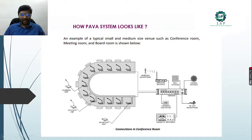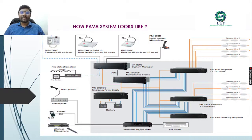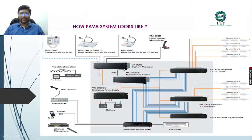In a conference room we have the main PAVA control unit, wireless receivers for connecting wireless microphones, wall speakers, ceiling speakers, and even cassette recorders can be connected. This is an example of a PAVA system established in GCC countries, mostly in metro stations, airports, and multi-storey buildings and malls. It has a main system manager, a surveillance frame, and an emergency power supply. If any power failure happens, the emergency power supply maintains power to the system manager and surveillance frame.